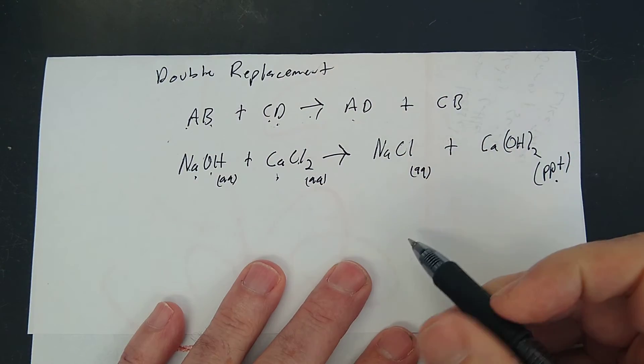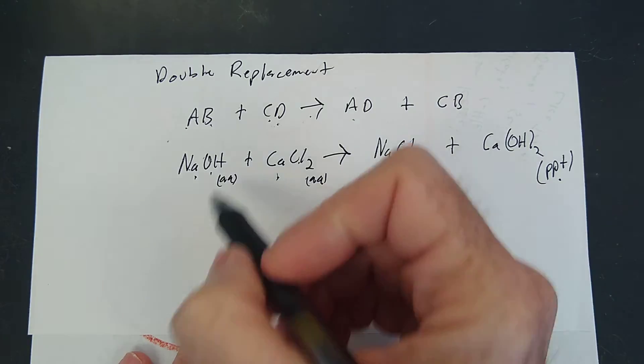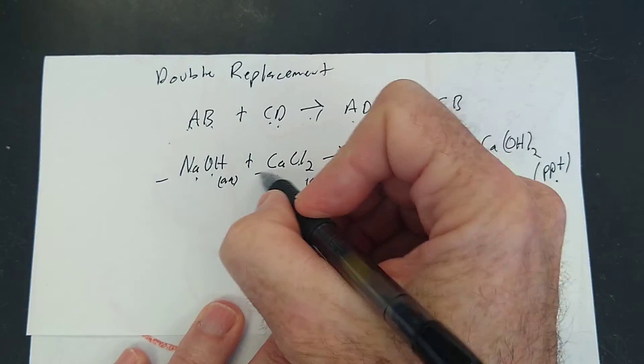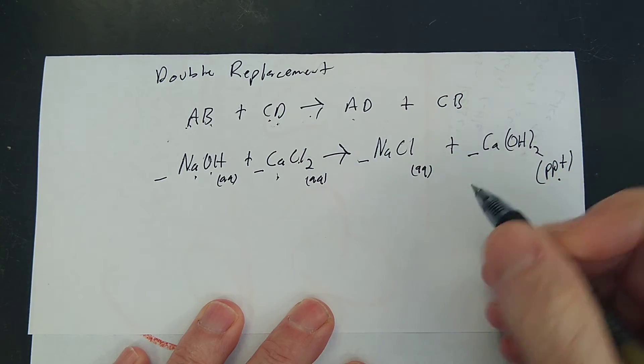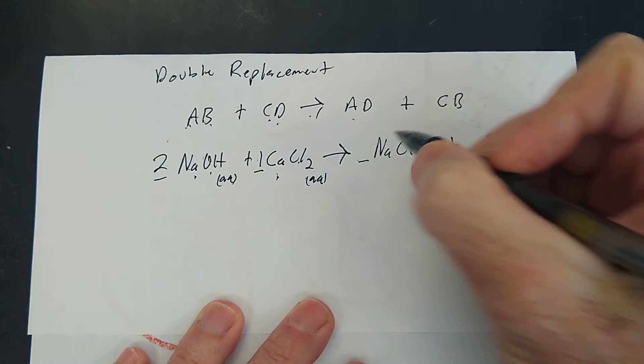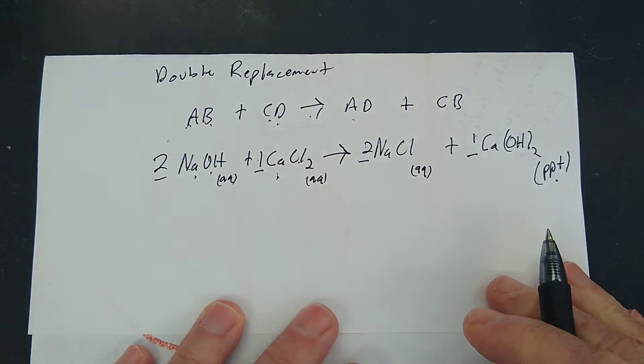So that's a good example of a double replacement reaction. Both of these metals were replaced and made new relationships. So that would end up being two, one, two, one if we balance.